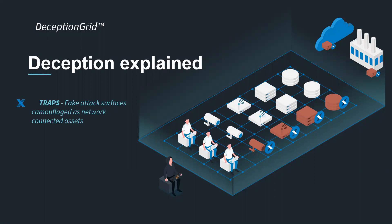Once the hacker communicates with one of the traps, or even scans or pings them, our system identifies the hacker and provides you with all the information needed to stop the attack. Most of our traps are not based on real servers with a real operating system, and are in fact emulations. More than 500 different traps can run on one single server.